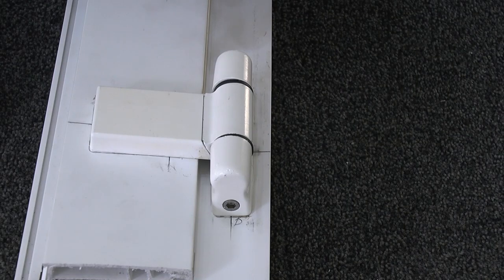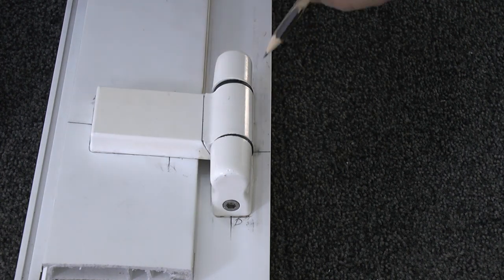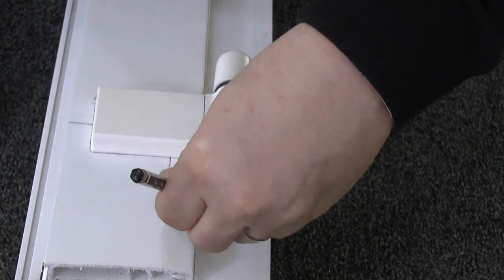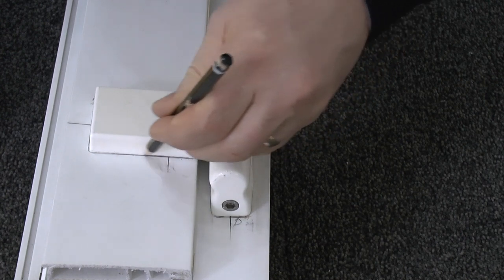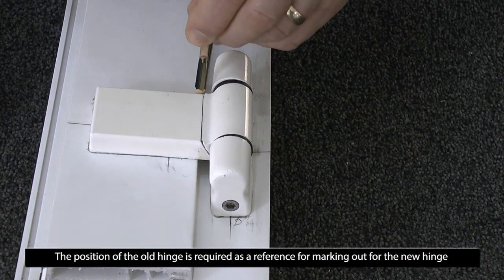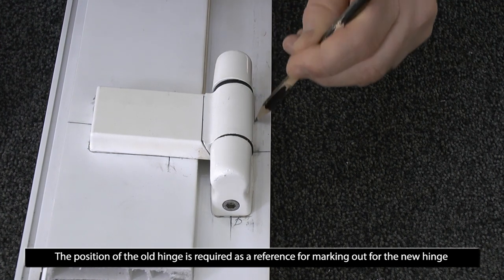The hinges, once you've decided that the door is in the correct position, now require drawing round with a pencil so that you know exactly the position it is before you remove the hinge.